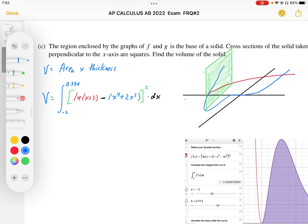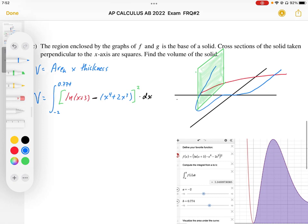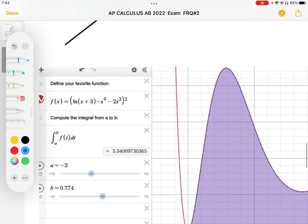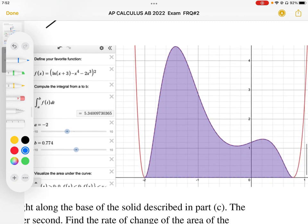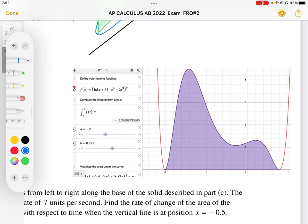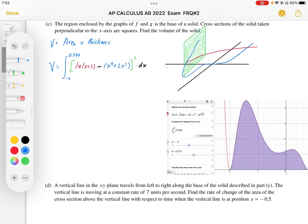So again, we don't want to mess around with this and expand this and do a whole bunch of algebra. This is a calculator section. So we're going to plug that into the calculator. So there's my integral. And when I calculate the area of that, the area works out to be 5.340. So the volume of this solid is going to be 5.340 units cubed.